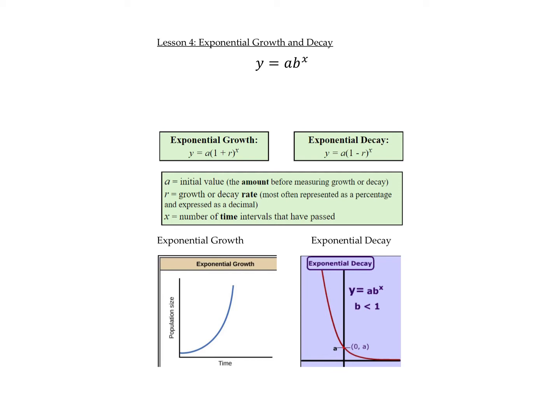In this lesson, we're going to look at exponential growth and decay models. An exponential function is always in the same form. We could write it as y equals b to the power x, where b is the base, or oftentimes as y equals ab to the power x, where b is the common ratio and a is the initial value.